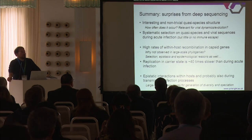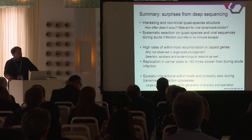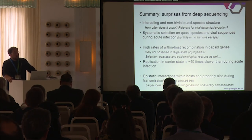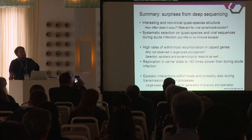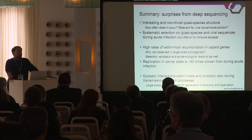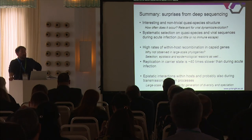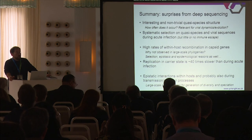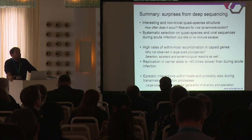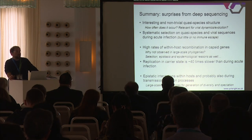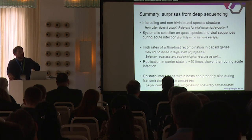In summary, deep sequencing of FMDV data is full of surprises. There is a non-trivial quasi-species structure whose relevance for epidemiology or viral evolution is not yet well understood. There is systematic selection of quasi-species and viral sequences during the acute infection phase, but little immune escape observed in the experiment. There are high rates of within-host recombination in capsid genes not observed on a larger scale. Replication in the carrier state is present but about 40 times slower than during acute infection, and there are lots of epistatic interactions in fitness within hosts, with potential similar interactions during transmission and infection.